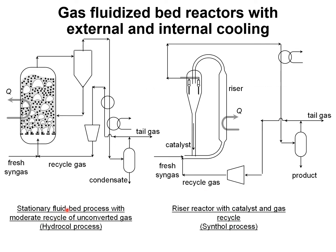The Fischer-Tropsch synthesis can also be carried out at higher temperatures, and two variants are shown in this figure. On the left, we have the Hydrocoil process that involves a gas-solid fluidized bed reactor with internal heat exchange. On the right, we have a dilute phase riser transport of gas and catalyst with a cyclone for separating the gas product from the catalyst, which is recycled back to the riser transport reactor. This is the Synthol process, characterized by a gooseneck construction connecting the riser to the cyclones.